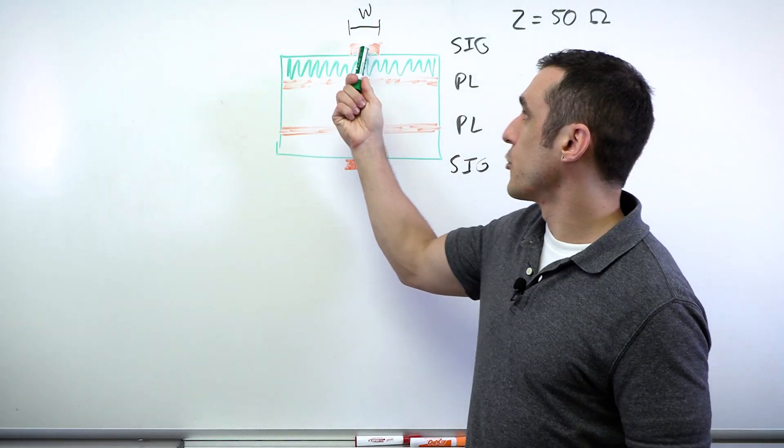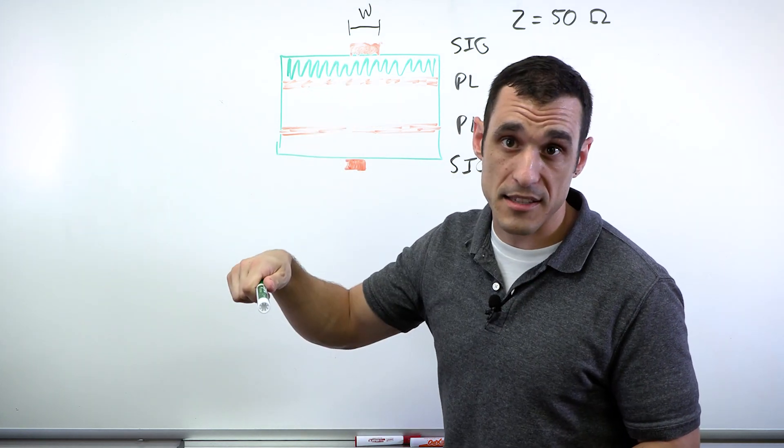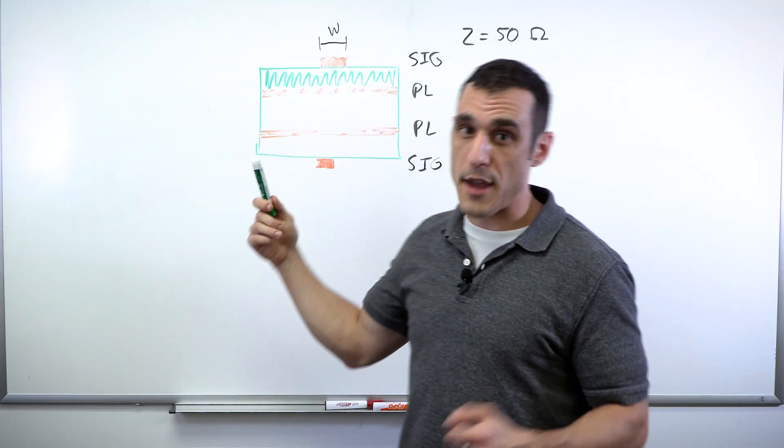And so if you design for one width without consulting your fabricator first, the fabricator may come back and tell you, hey, that width doesn't actually give you 50 ohms. And then you have to change your design.